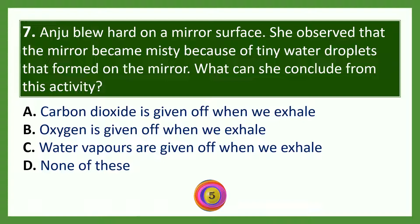Match the columns and select the correct option. The answer is option C. Kidney is a part of the excretory system; liver is a part of the digestive system; brain is a part of the nervous system; blood is a part of the circulatory system; and bones are a part of the skeletal system.